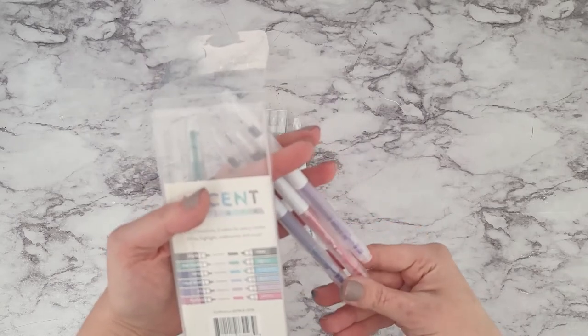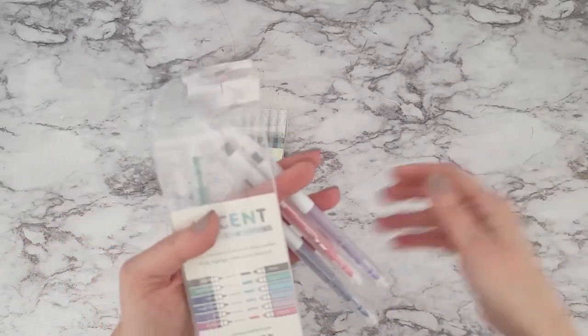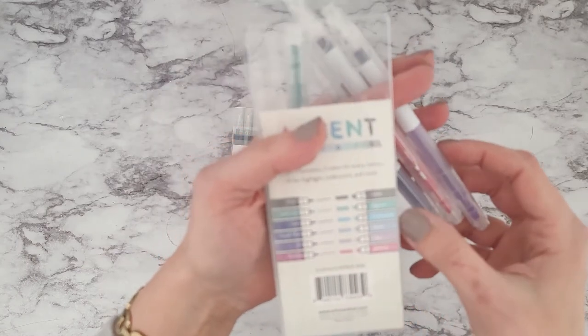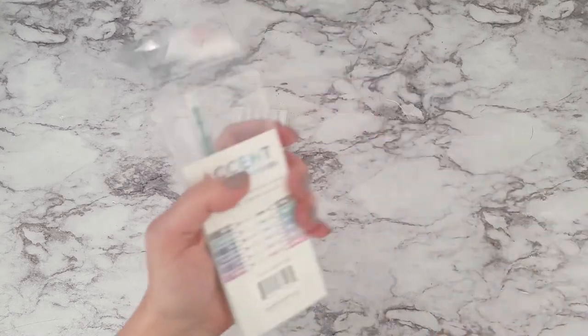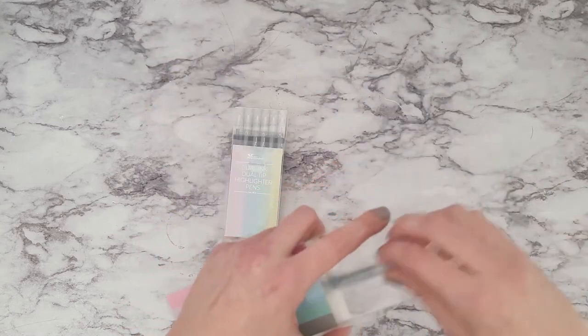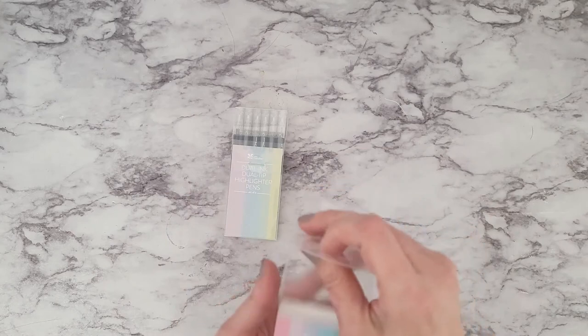There's navy and turquoise. There is royal blue and dusk. Iris and lilac. And then fuchsia and peony. So, I will show the swatch of those here in just a few minutes.